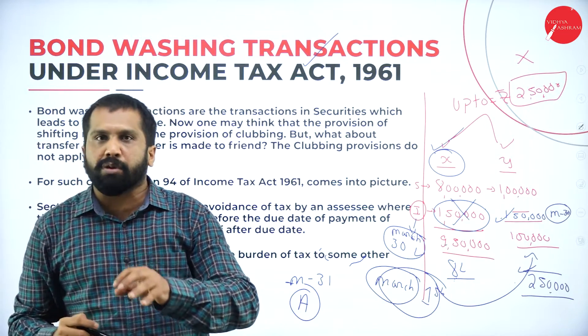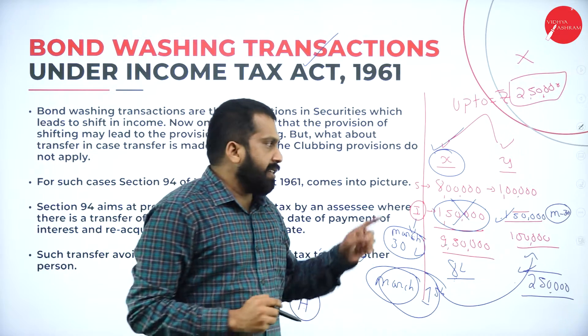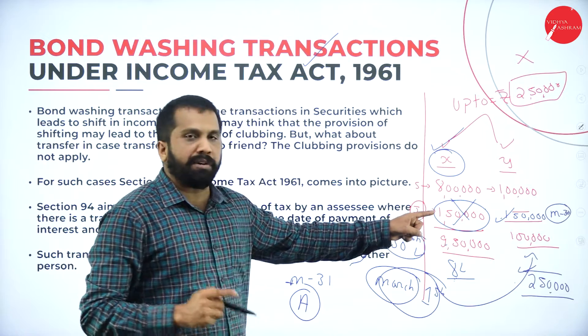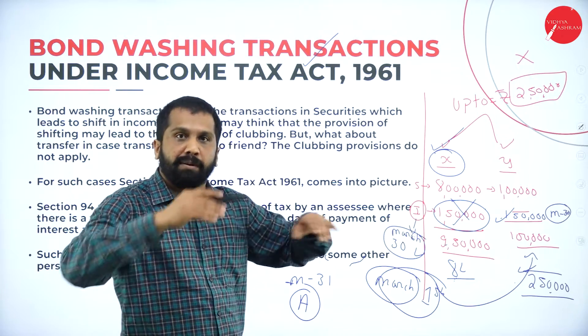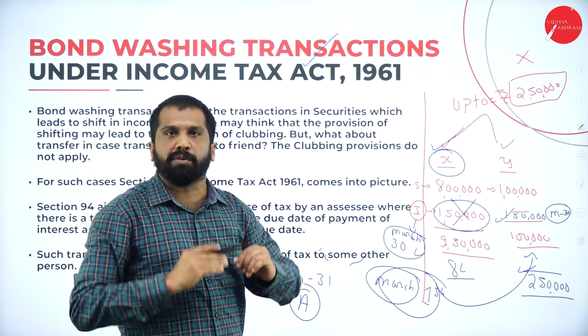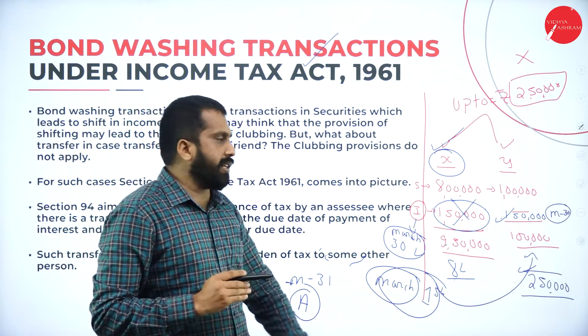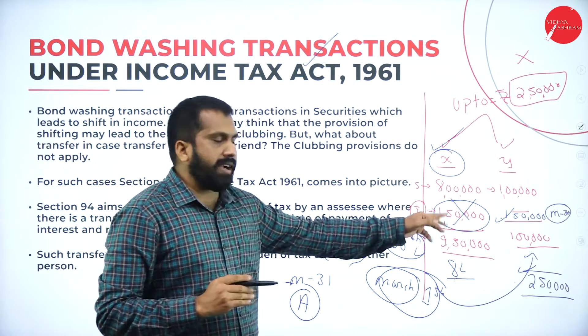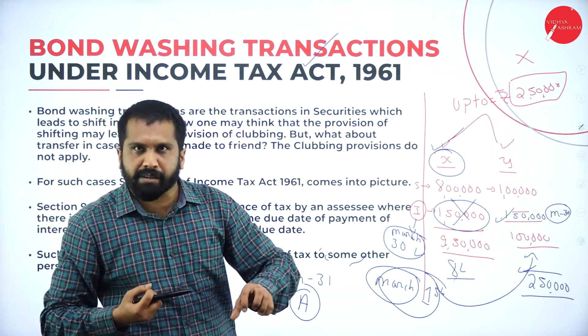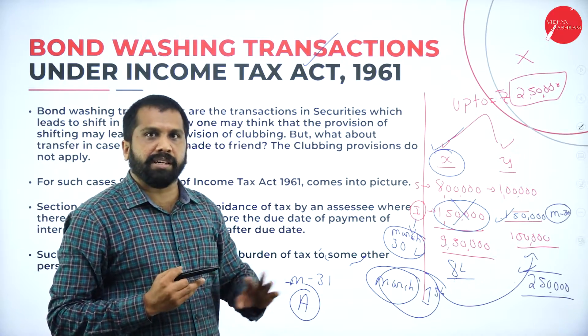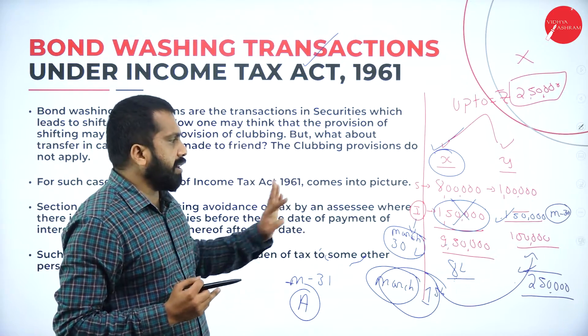This is all about bond washing transaction. Normally, people to avoid tax will transfer to few people who have less income, so that to avoid tax. Later they will take it back.